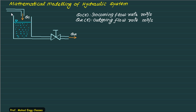Now Q1(t) is called as incoming flow rate. Q2 is called as outgoing flow rate. Both are measured in meter cube per second. H is the head.